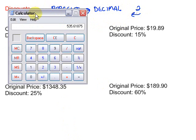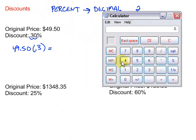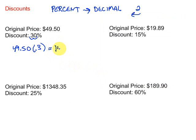So let's go ahead and do that. We've got 49.50 times 0.3 gives us 14.85. Is that the amount we're going to pay? No, that's the amount we're going to save.